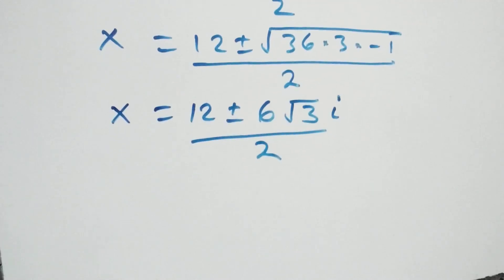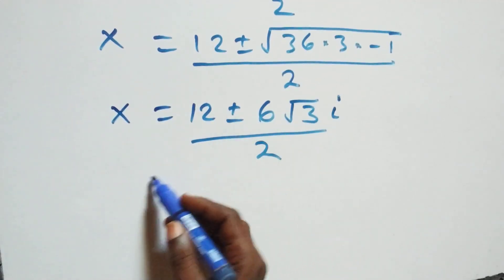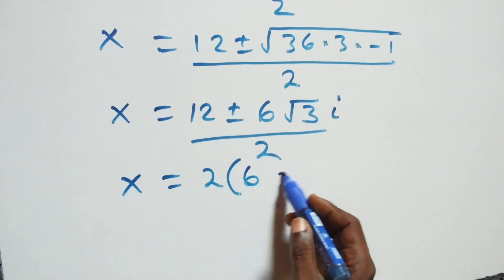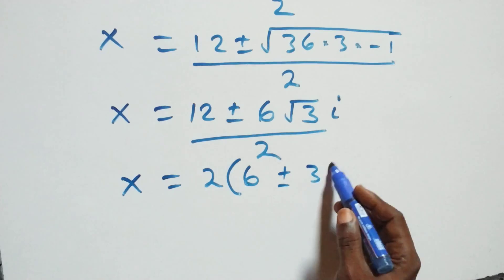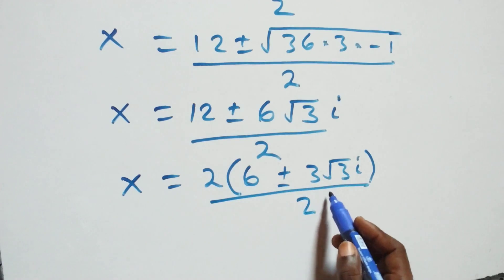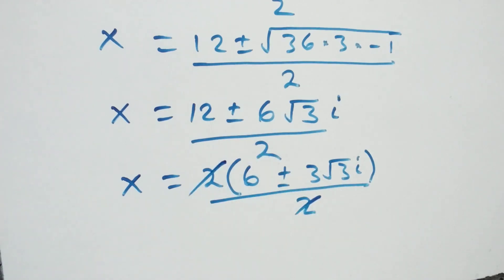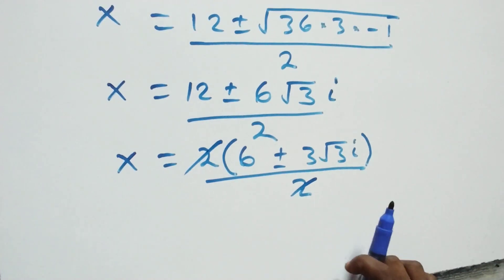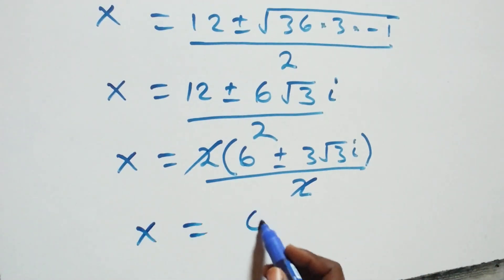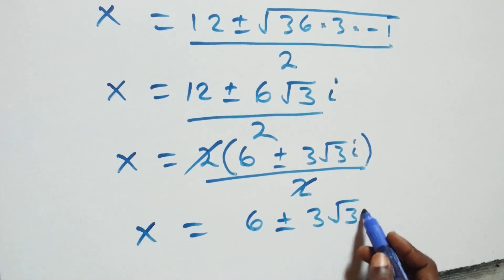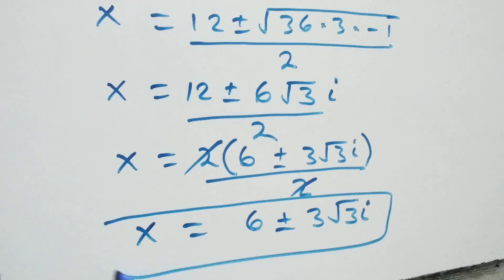Since 2 is common, we factor: x equals 2 times (6 plus or minus 3 root 3 i), all over 2. The 2s cancel, and this becomes x equals 6 plus or minus 3 root 3 i. That gives us two complex solutions from Case 1.